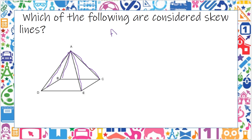AB, AC, AD, and AE are all skew lines because they are not parallel or perpendicular to the base.